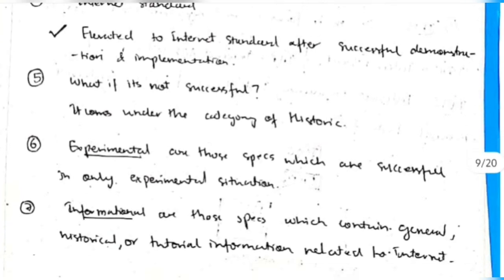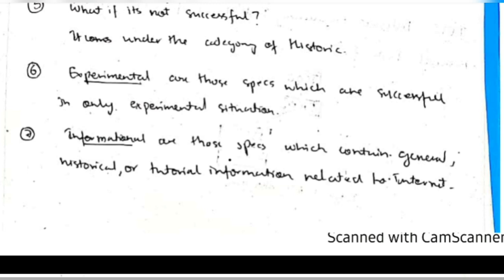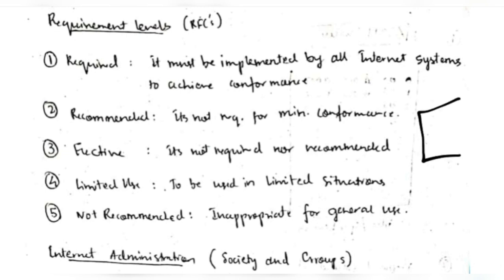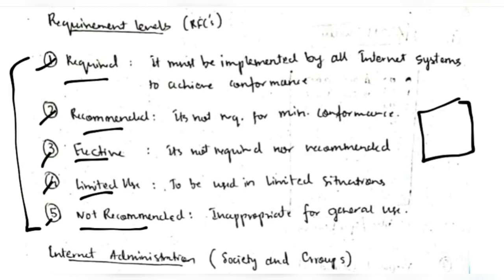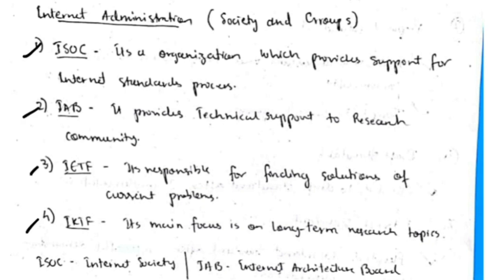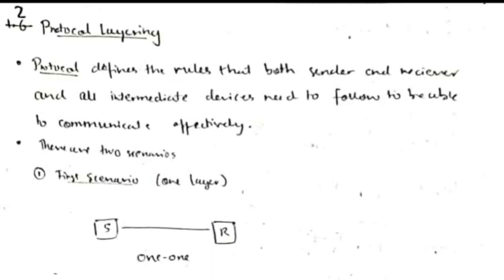Some specifications applicable only in experimental situations fall under the experimental category. Specifications containing general information and tutorials about the internet fall under the informational category. RFCs (Request for Comments) describe levels such as required, recommended, elective, limited use, and not recommended. Various groups and societies handle support for the internet standard process and technical support for research communities — these come under internet administration.